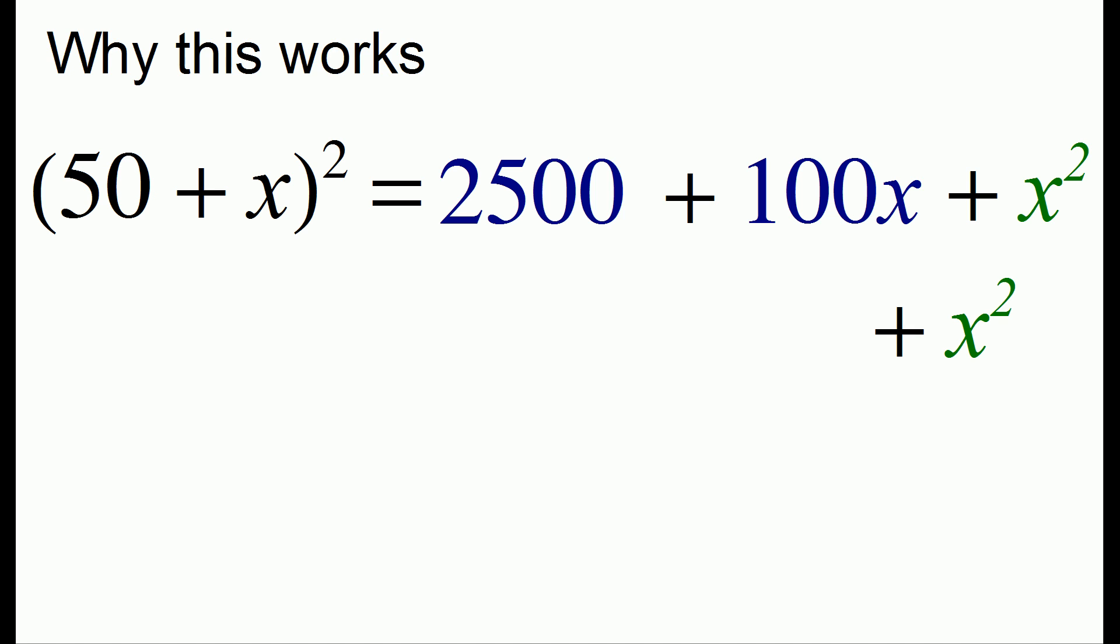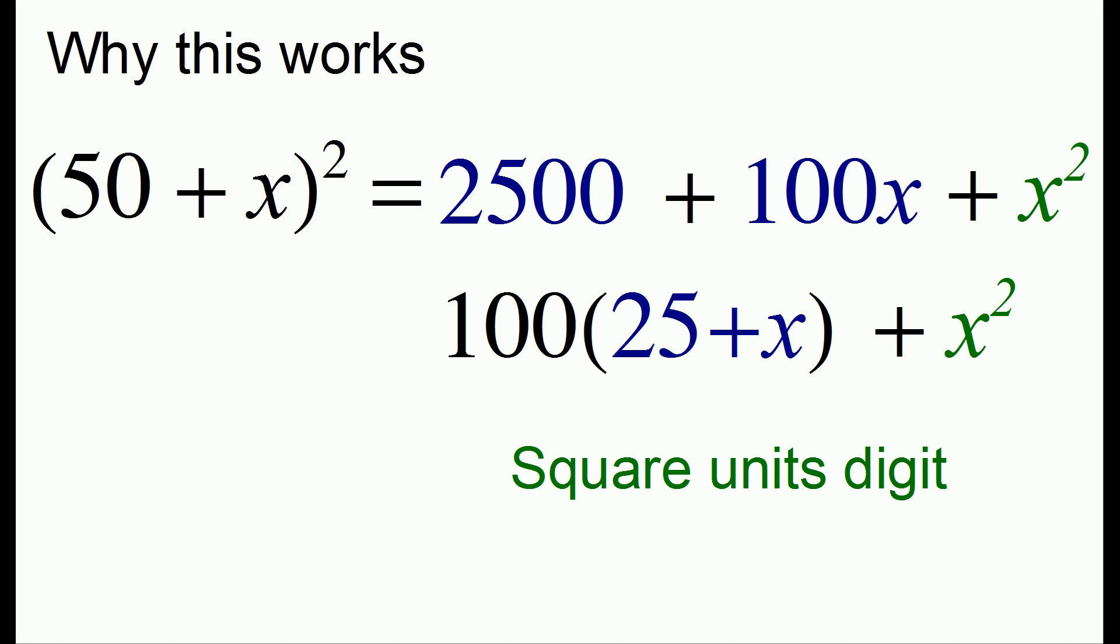So we can rewrite the x squared, and we can take the terms that are highlighted in blue and factor out 100 to get 100 times 25 plus x. And this is where the formula comes from. The x squared is where we get the rule to square the unit's digit, and the 25 plus x is where we get the rule to take 25 plus the unit's digit.